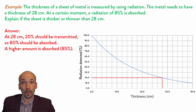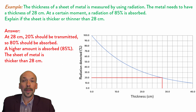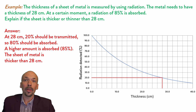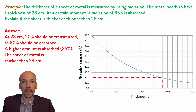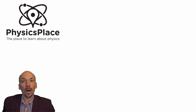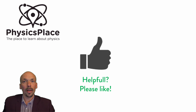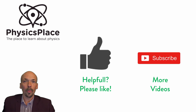A higher amount is absorbed — 85% — so the sheet of metal is thicker than 28 cm. Because a higher amount has been absorbed, that means the metal is thicker. You should now know what half value layer or half value thickness is. If you found this video helpful, please let me know by liking, and of course subscribe for more videos. Thanks for watching.